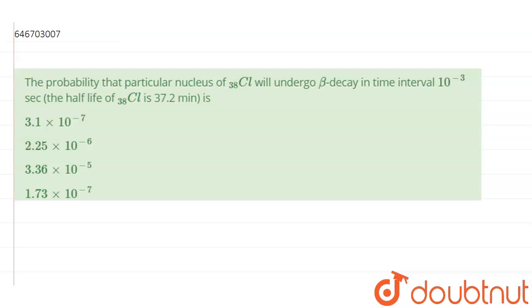The probability that a particular nucleus of ³⁸Cl will undergo beta decay in a time interval of 10⁻³ seconds — given that the half-life of ³⁸Cl is 37.2 minutes — is?